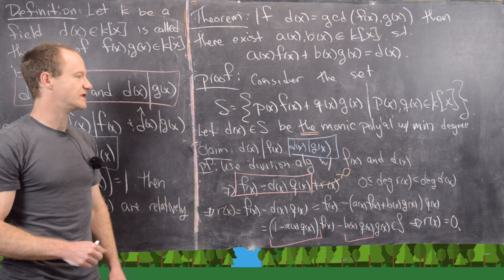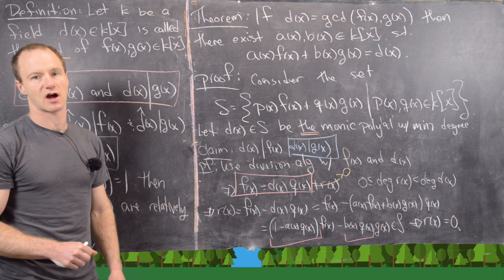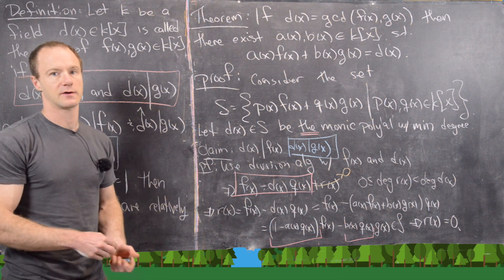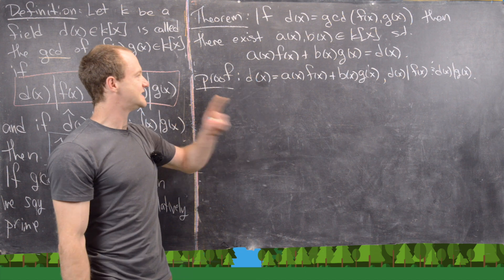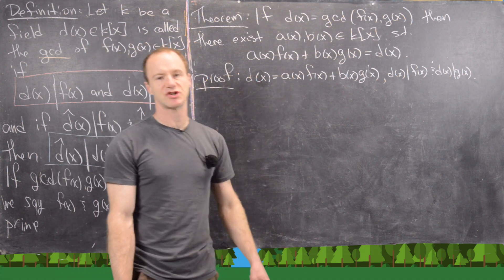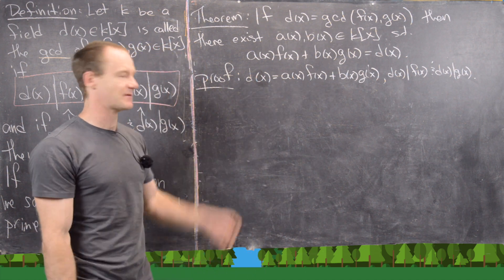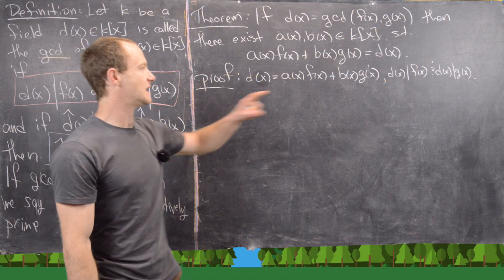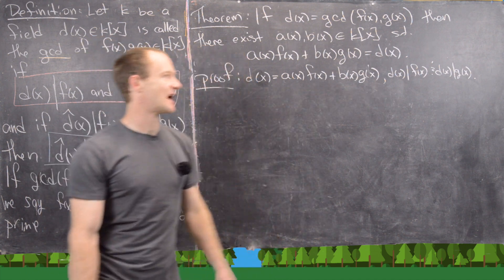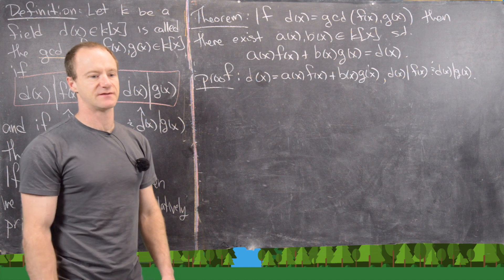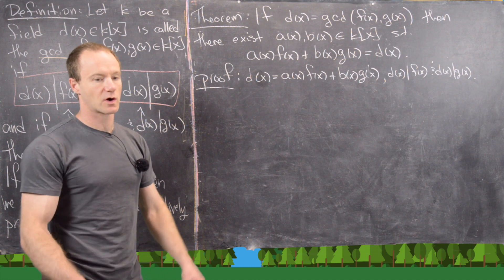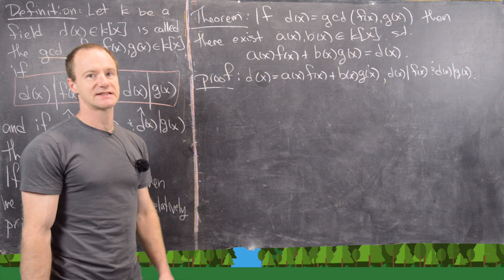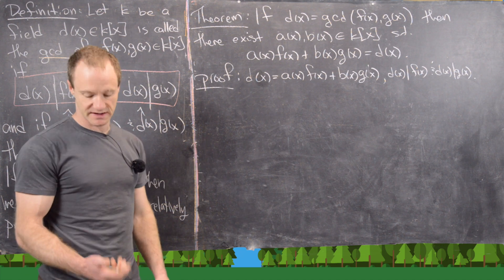We've shown D(X) is a common divisor of F(X) and G(X). Now we need to show it is the greatest such common divisor. We have that D(X) is written as a combination of F(X) and G(X) — it came from the set S — and that D(X) divides both F(X) and G(X). So the minimal element of S is indeed a common divisor.